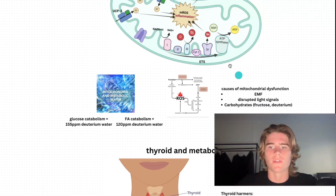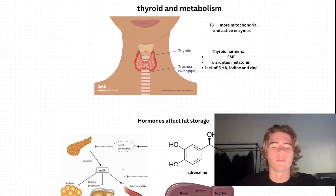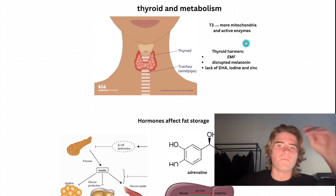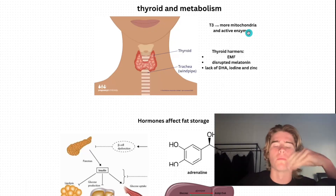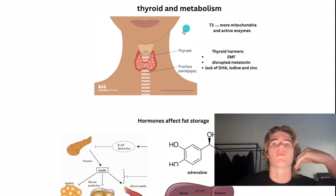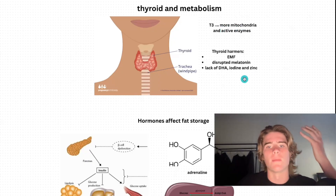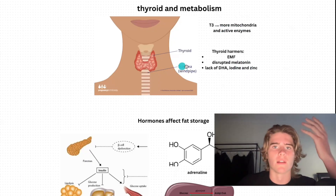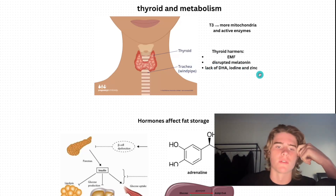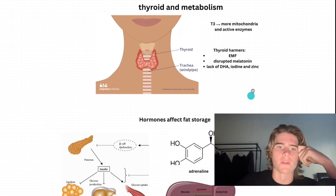So deuterium, fructose, EMFs, and disrupted light signals all affect the metabolism. Next, we have the thyroid. So T3 hormones — when you have healthy T3, you're going to have more mitochondria and the mitochondrial enzymes are going to be active. If you have a damaged thyroid from EMFs, disrupted melatonin, light signals, and lack of DHA, iodine, and zinc — because that's what synthesizes T3 hormones — you're going to have worse metabolism because of that.